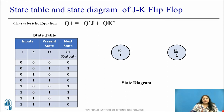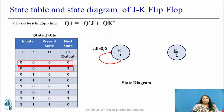Let us now consider all the input combinations one by one. When the present state is 0 and J equals K equals 0, the next state value is the same as the present state value, so it remains in the same state. Similarly, when the present state is 1 and J equals K equals 0, there is no change in the next state and it remains in the same state.